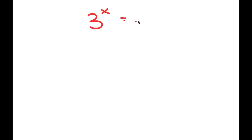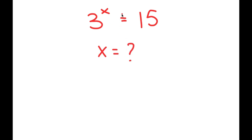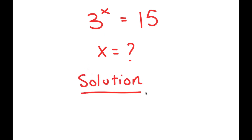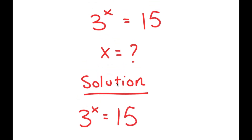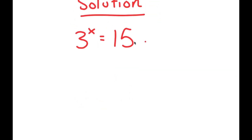In this video, I'm going to solve the equation 3 to the power of x is equal to 15. My only variable in this equation is x, so that's what I'm going to be solving for. Let me first start by rewriting my equation: 3 to the power of x is equal to 15, and I can rewrite 15 as 3 times 5.